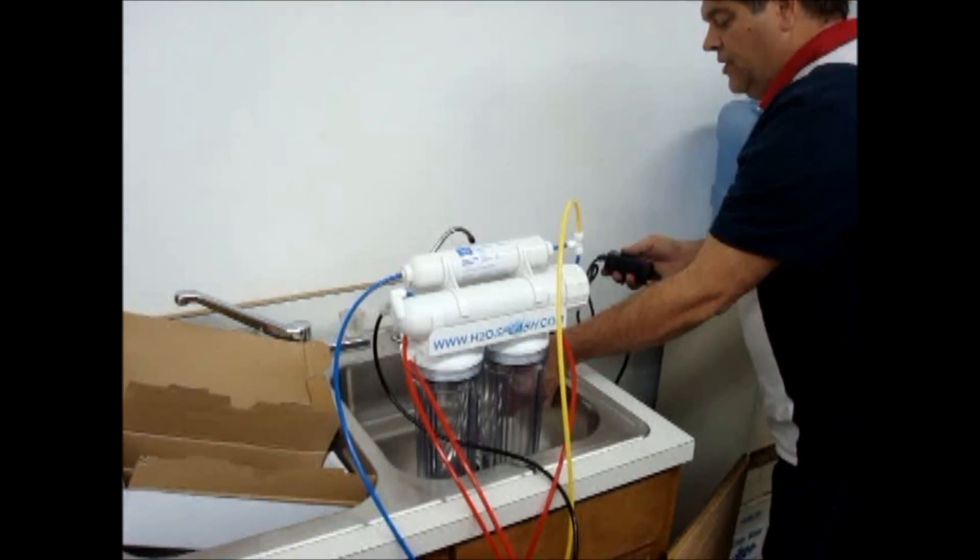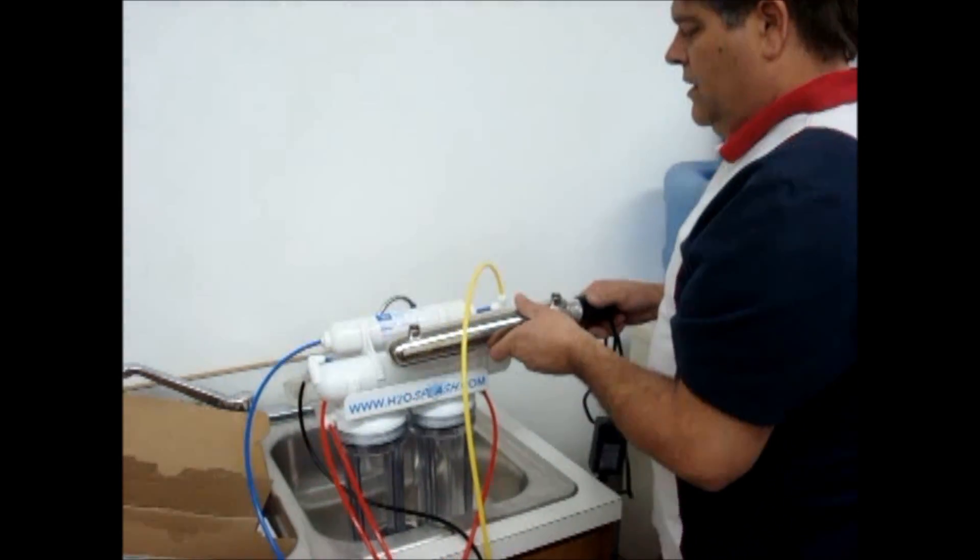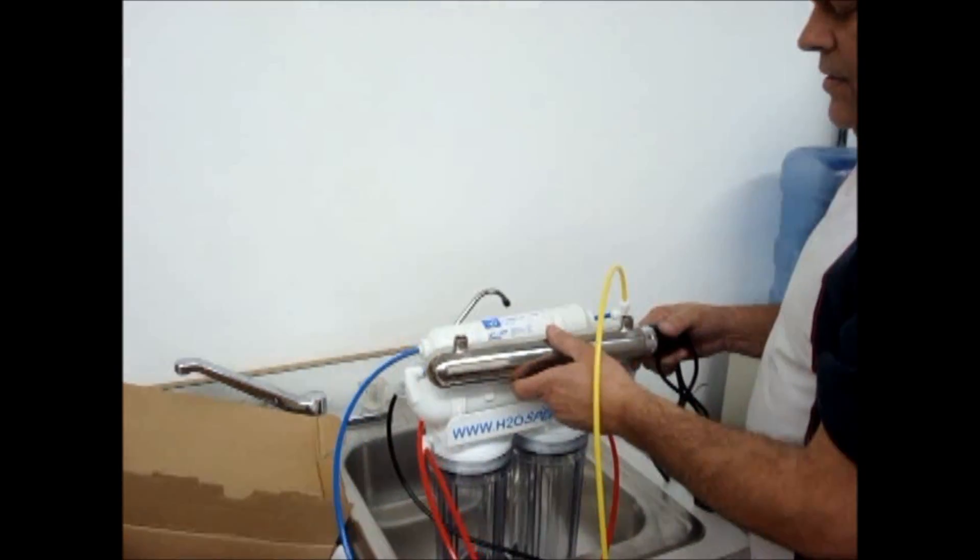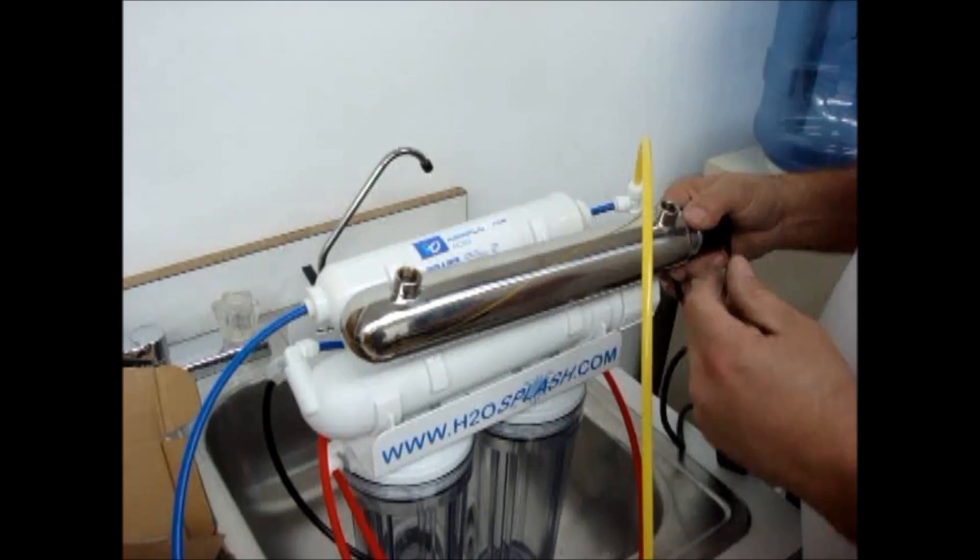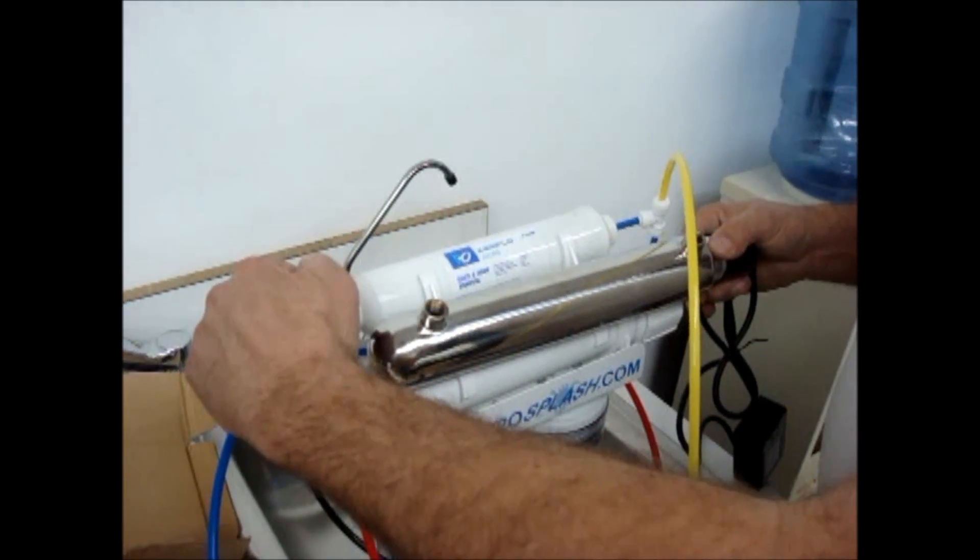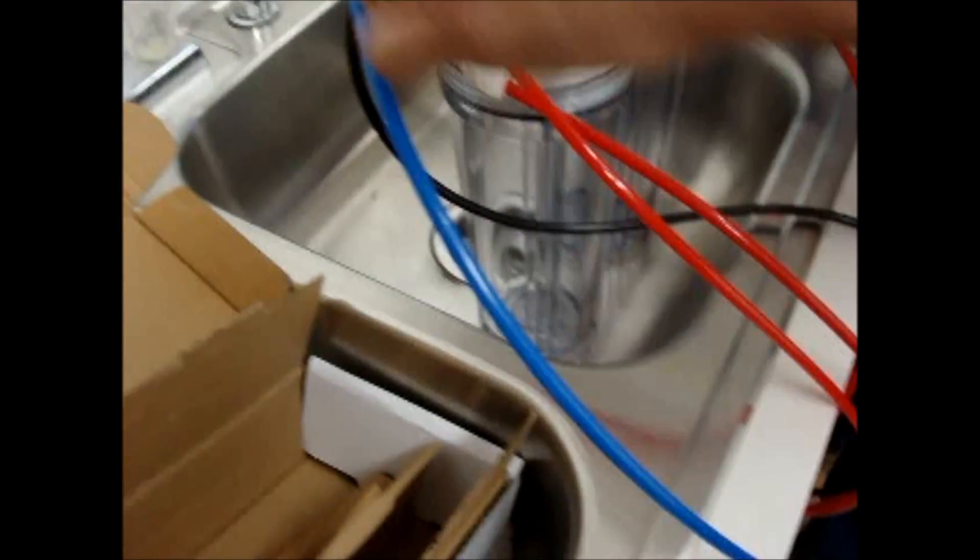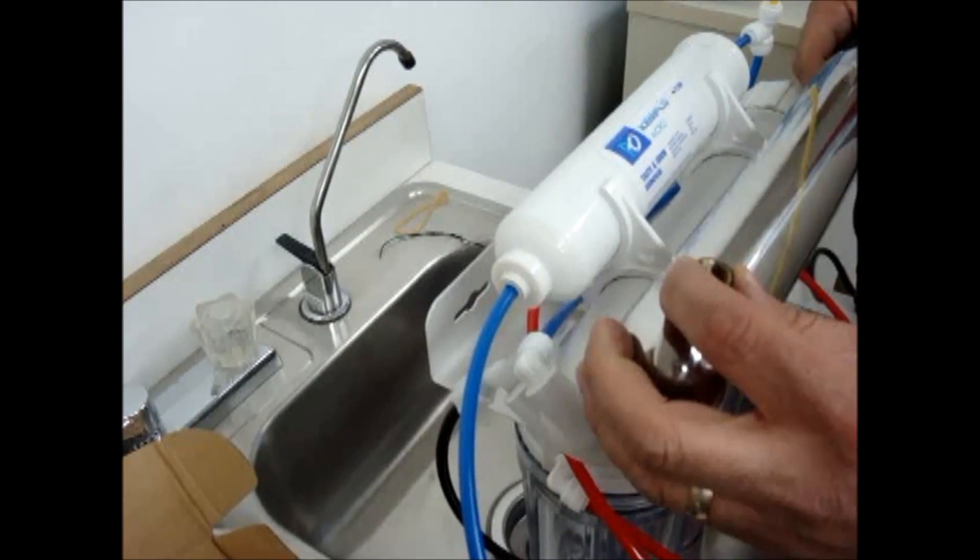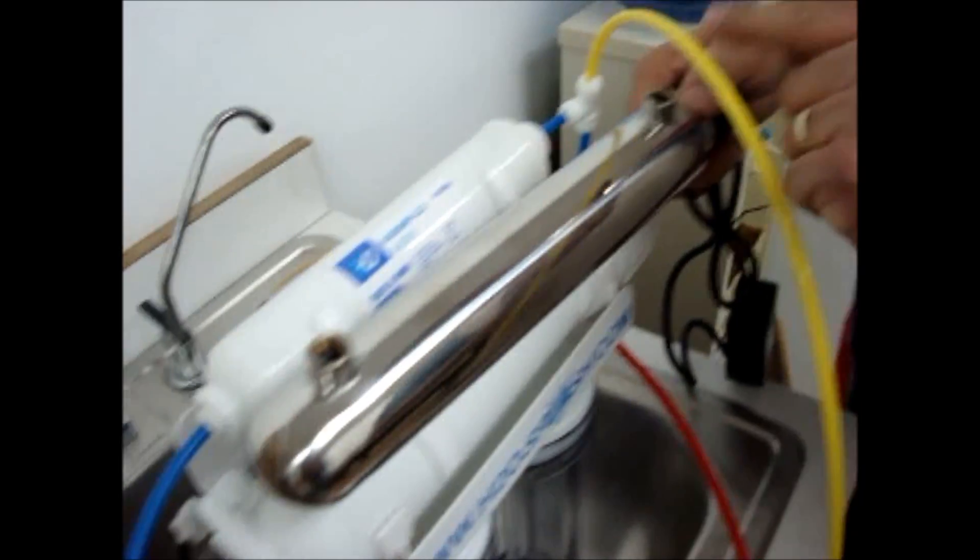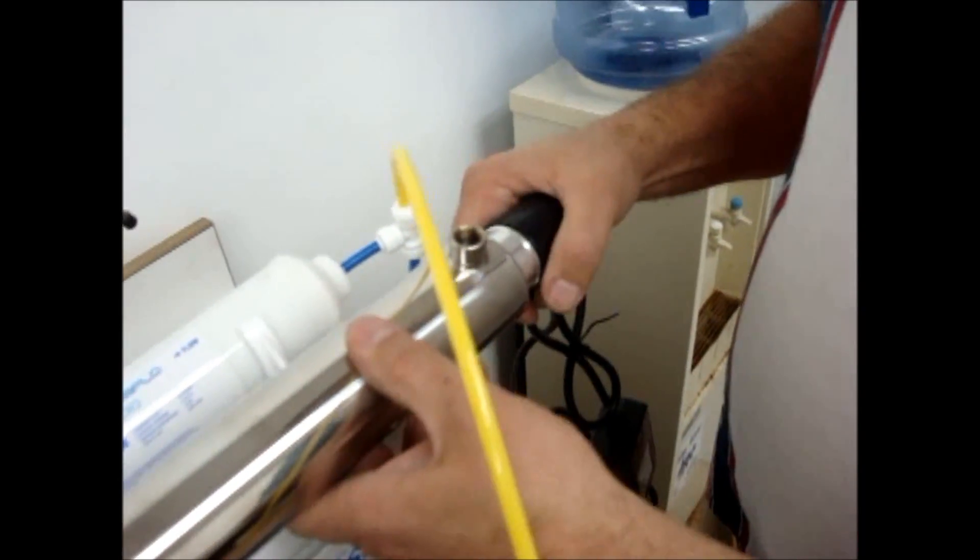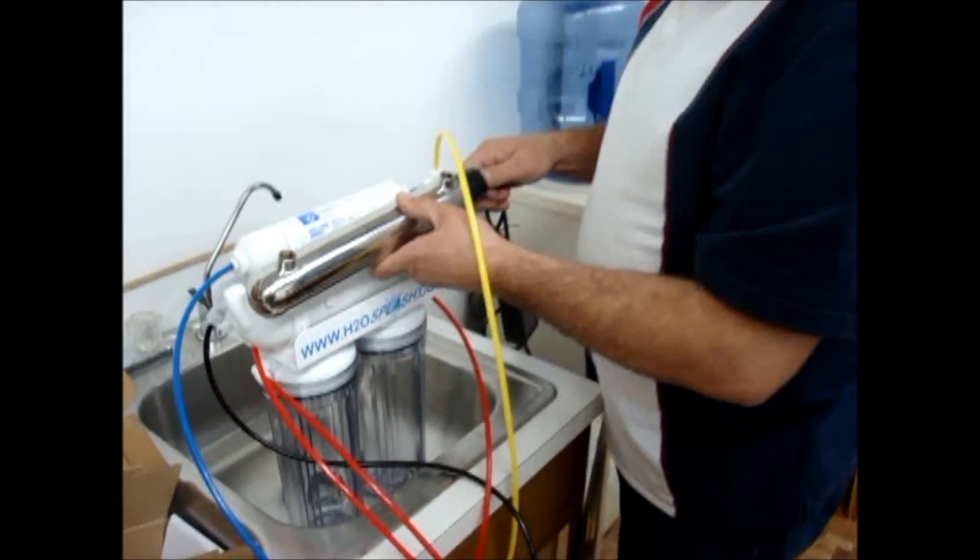The other part of installation, if it's a new installation, is the plumbing. On the RO system, the ultraviolet light is the last stage of the RO unit. So you'll come out of your faucet line, and instead of going to the faucet, your fitting will be here and it'll go into that side, out this side, and then right up to your faucet. So again, the UV light is the last stage in the RO system.